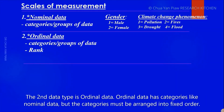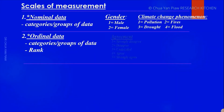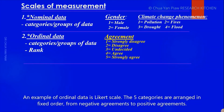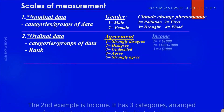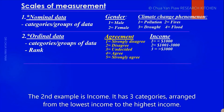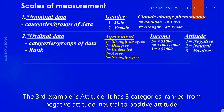The second data type is ordinal data. Ordinal data has categories like nominal data, but the categories must be arranged in a fixed order. An example of ordinal data is a Likert scale, where five categories are arranged in fixed order from negative agreement to positive agreement. Another example is income, with three categories arranged from lowest to highest. A third example is attitude, arranged from negative attitude, to neutral, to positive attitude.